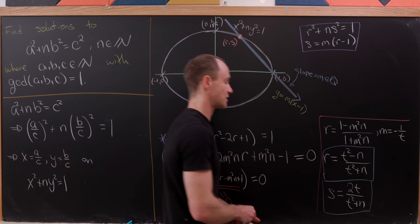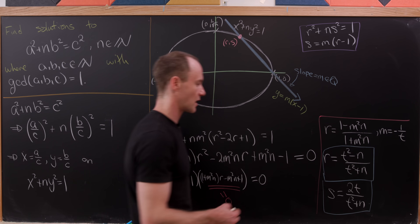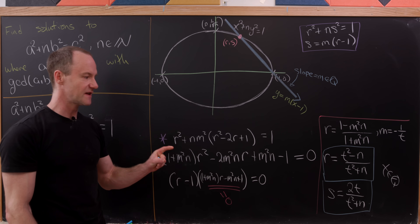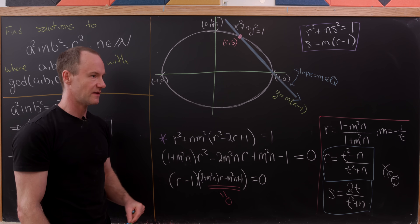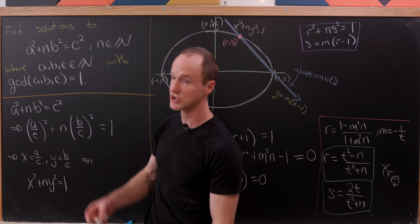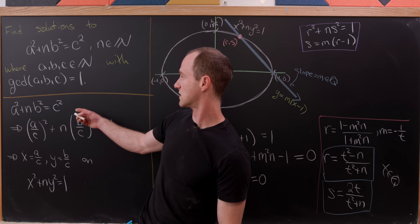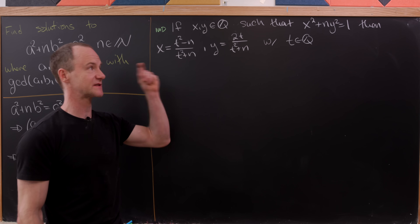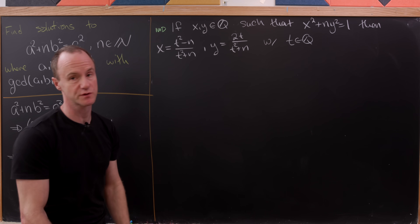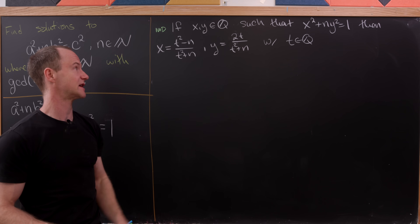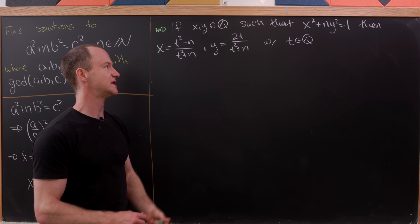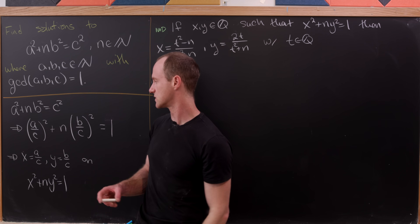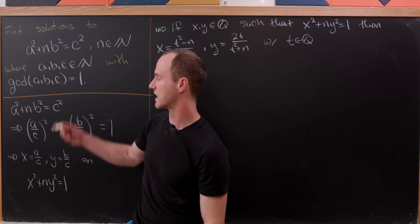This represents all solutions for r and s as t ranges through all rational numbers. So all rational points on the ellipse x² + ny² = 1 are given by x = (t² − n)/(t² + n) and y = 2t/(t² + n), where t is rational. Now we want to bootstrap these back to integer solutions of a² + nb² = c².